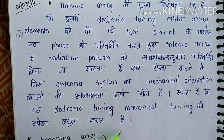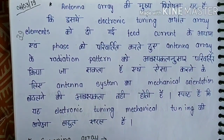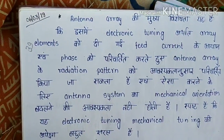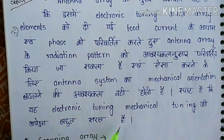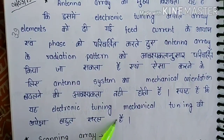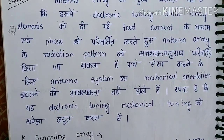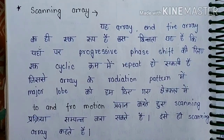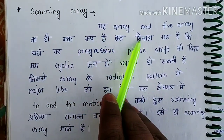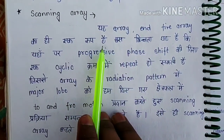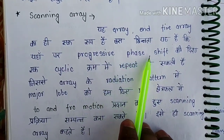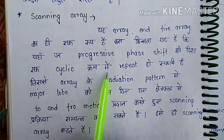In mechanical tuning there was a problem — the signal was difficult to handle. But if we do electronic tuning, it would be easy. Next, we will discuss scanning array. The scanning array is similar to an end-fire array.